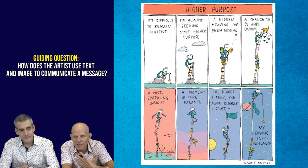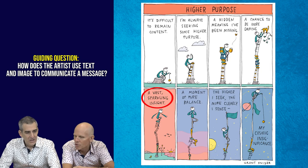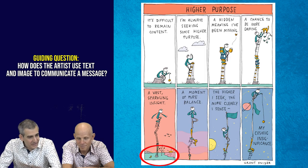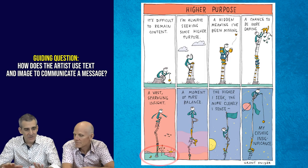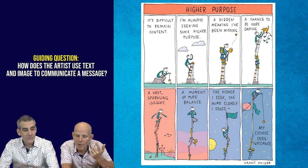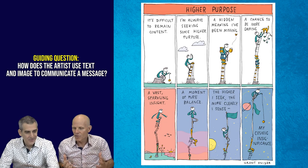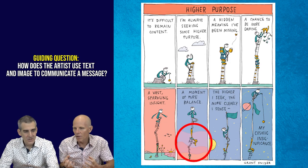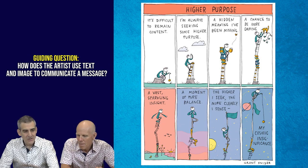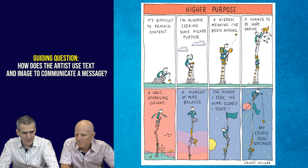Now we see sunset - the orange-hued panel five. He's talking about a vast sparkling insight, which is really powerful imagery. He's climbed so high - the cat is tiny down at the bottom - and we have this sense that he's very precarious trying to balance himself. He's achieving insight, the books are gone, he's high in the sky. Sunset works as a time of reflection. Then in panel six we see this moment of pure balance with a yoga pose, connected to meditation and philosophy - he wants that balance.